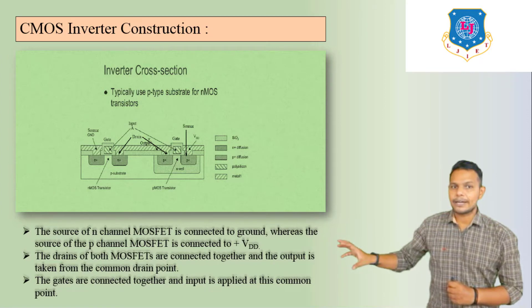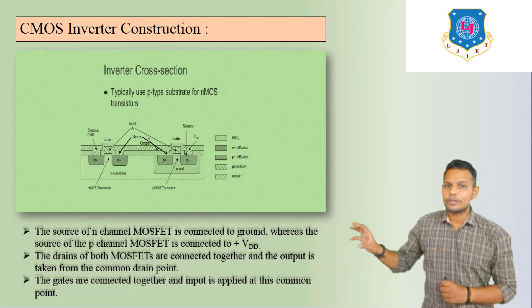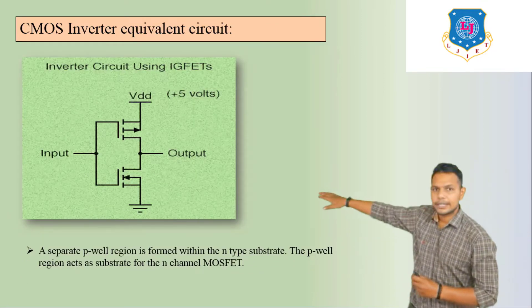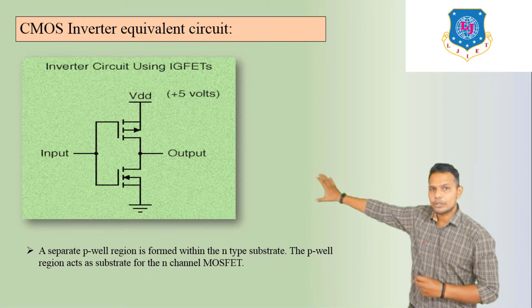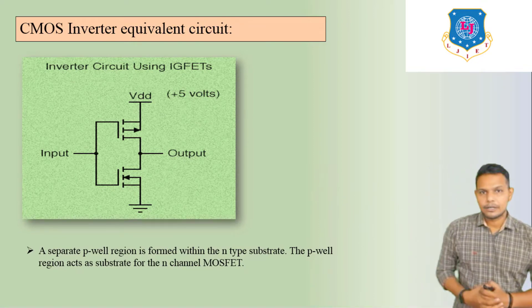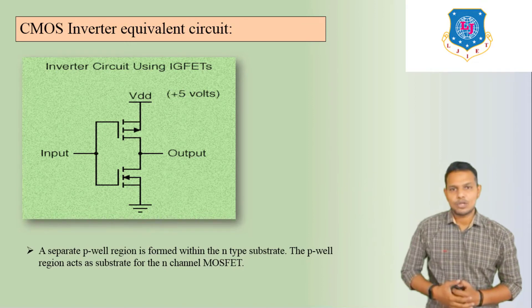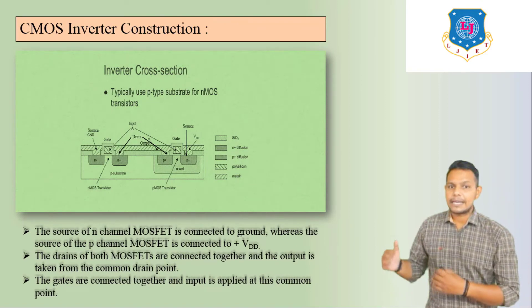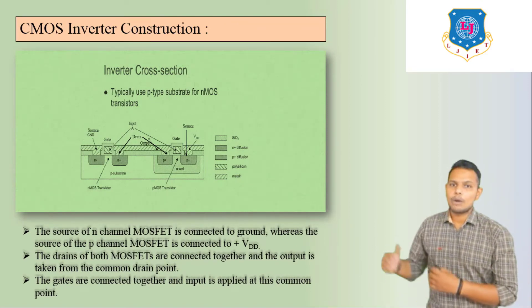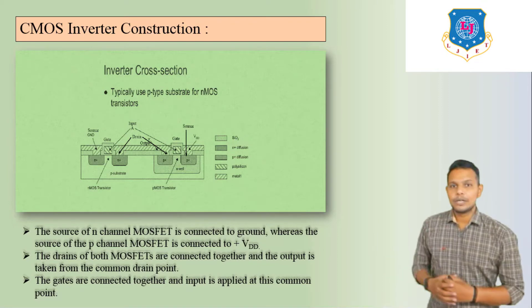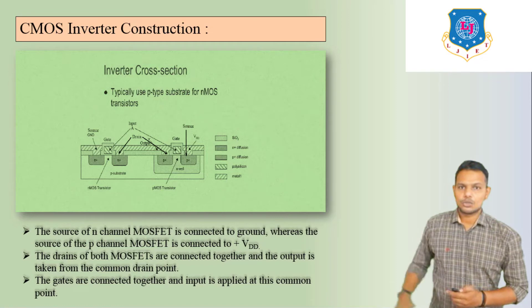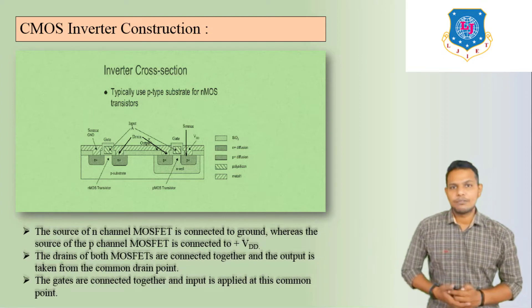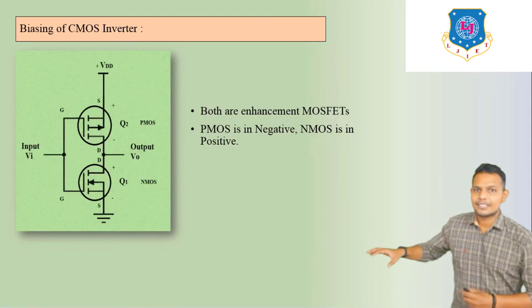The drains of both MOSFETs are connected together and the output is taken from this common drain point. Here we can see the output is connected at the drain of both the N-MOSFET and P-MOSFET. The gates are connected together and the input is applied at this common gate point. The output is also taken from a common terminal.